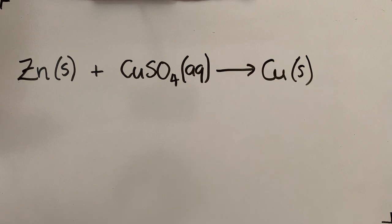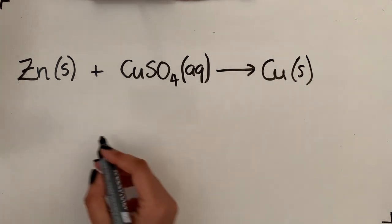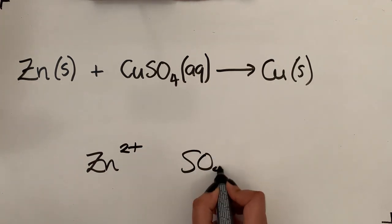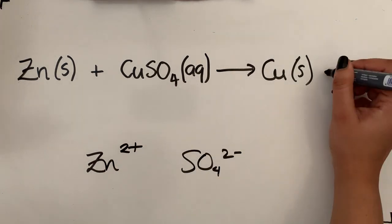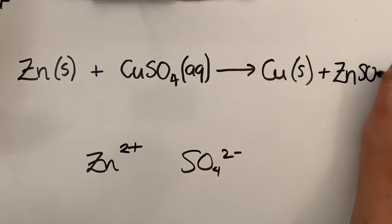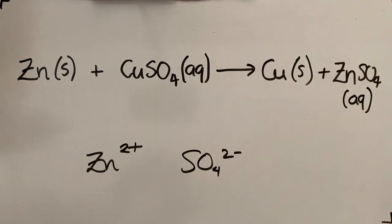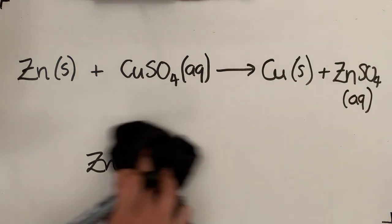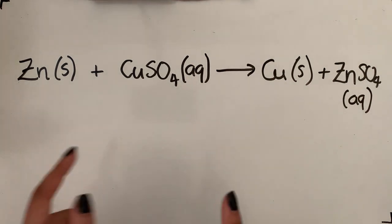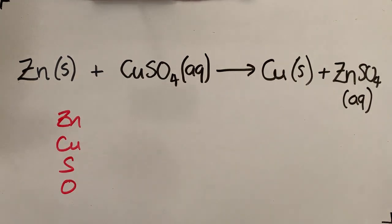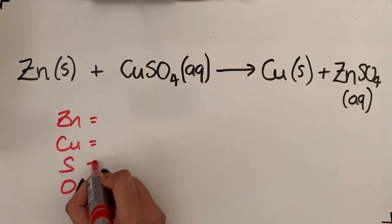It produces zinc sulfate solution. Now zinc as an ion is always 2+, sulfate is 2-, so the formula for this is ZnSO4. It's just going to come off at the end, so I'm just going to put aqueous down here because it tells you it's zinc sulfate solution. Then you just check if it is balanced. You've got zinc, copper, sulfur, and oxygen on both sides.